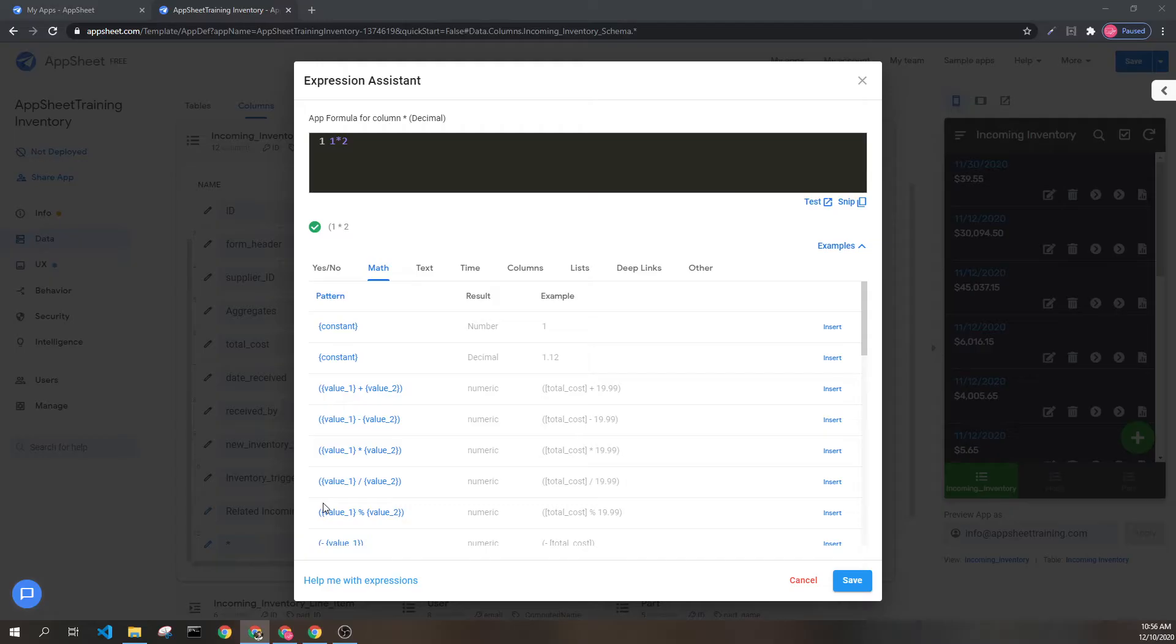Let's look at some examples. Here we have 1 times 2 which results in 2. This technically returns a number but it can be stored in decimal columns. It will just be stored as 2.0.